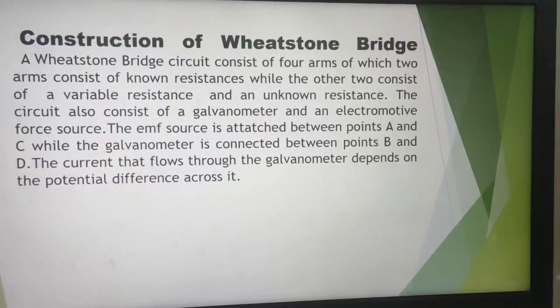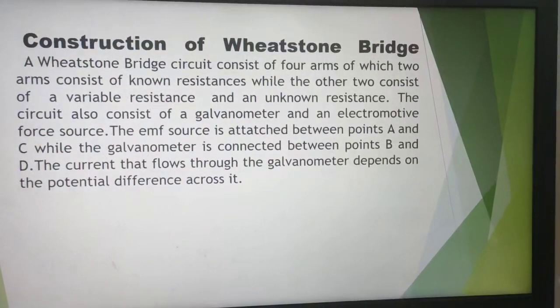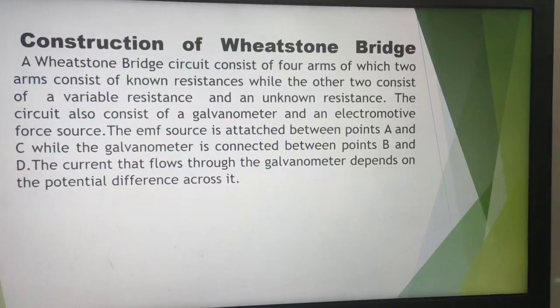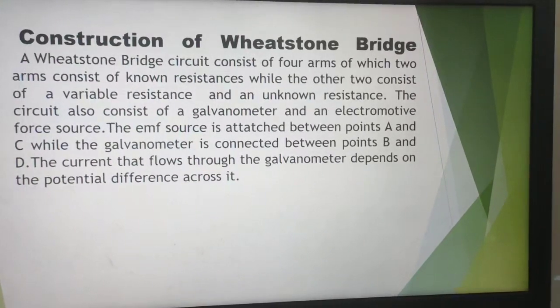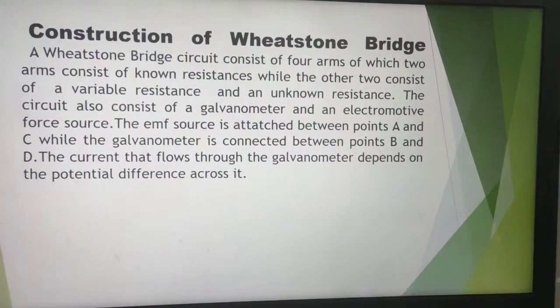The EMF source is attached between point A and C, while the galvanometer is connected between point B and D. The current that flows through the galvanometer depends on the potential difference across it.